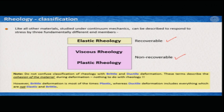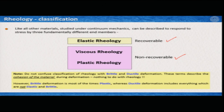I would like to remind you one very important thing that we commonly mistake in describing structural geological deformation features. With these three rheological terms — elastic, viscous, and plastic — we sometimes use more or less similarly the two terms brittle and ductile. It is very, very important to remember that the classification of rheology has nothing to do with brittle and ductile deformation. Brittle and ductile deformation only considers whether the cohesion of the materials is maintained or not during deformation — that is it.